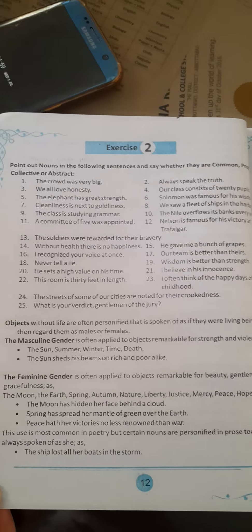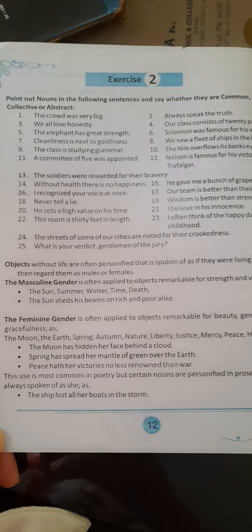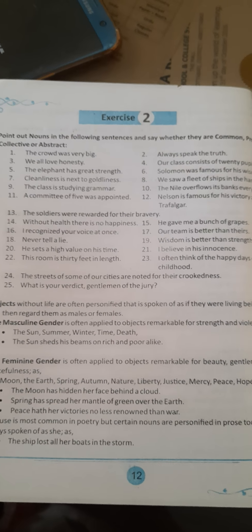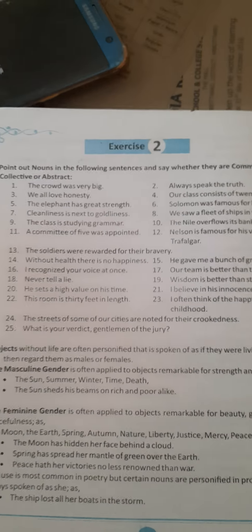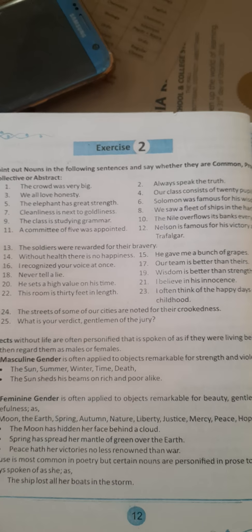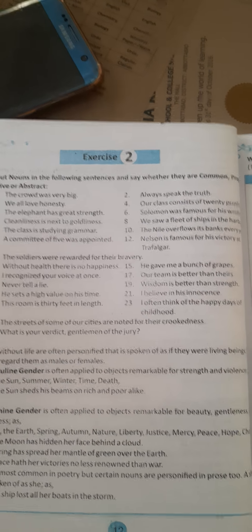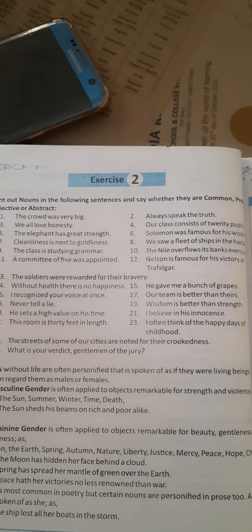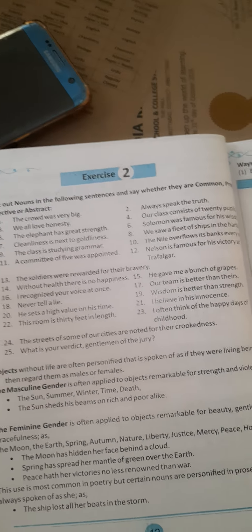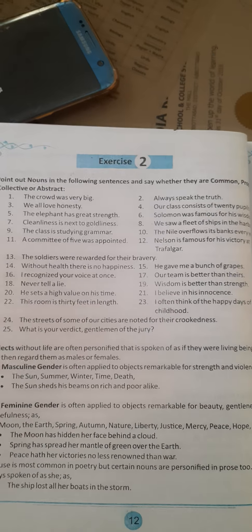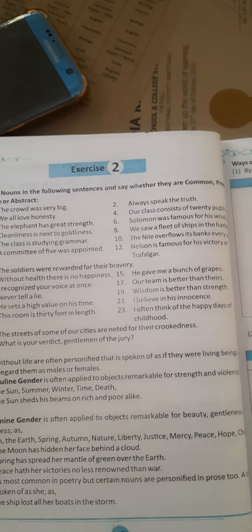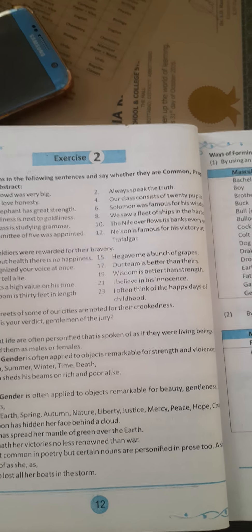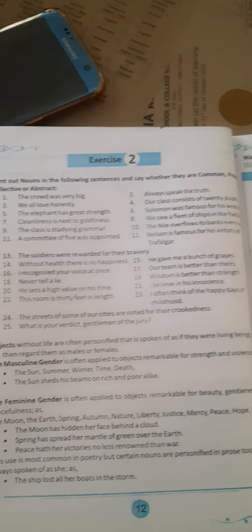Now the next exercise is exercise 2, page number 12. Point out nouns in the following sentences and say whether they are common, proper, collective or abstract. The crowd was very big — crowd is a collective noun. Always speak the truth — truth is an abstract noun. We all love honesty — honesty is an abstract noun. Our class consists of 20 pupils — class is a collection of students, here it is a collective noun. The elephant has great strength — elephant is a common noun and strength is an abstract noun. Solomon was famous for his wisdom — Solomon is a proper noun and wisdom is an abstract noun.